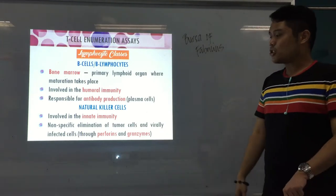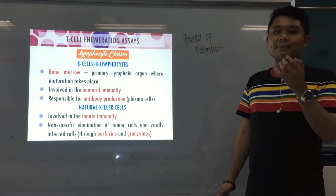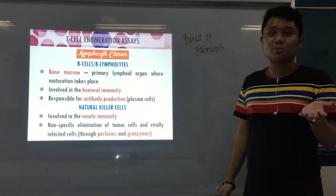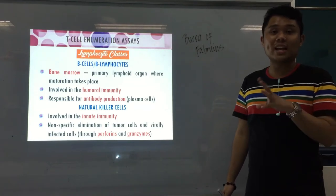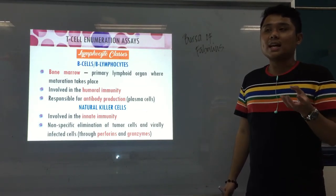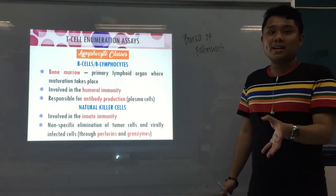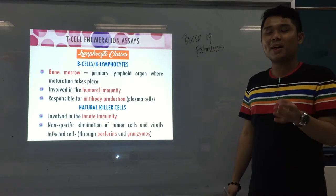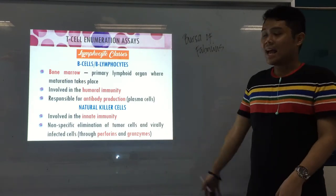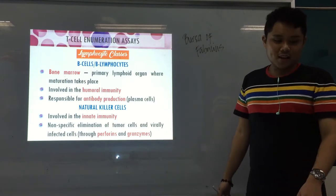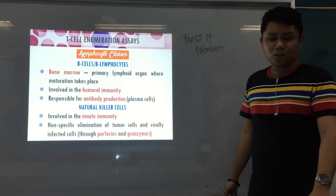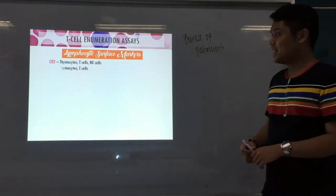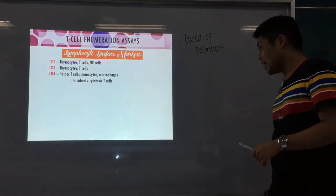Natural killer cells are part of innate immunity because they kill without any specificity, without any preference. Now we go to lymphocyte surface markers.